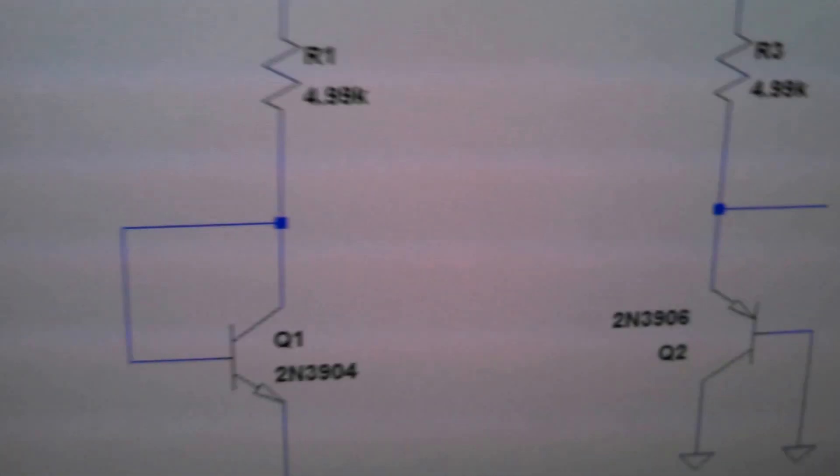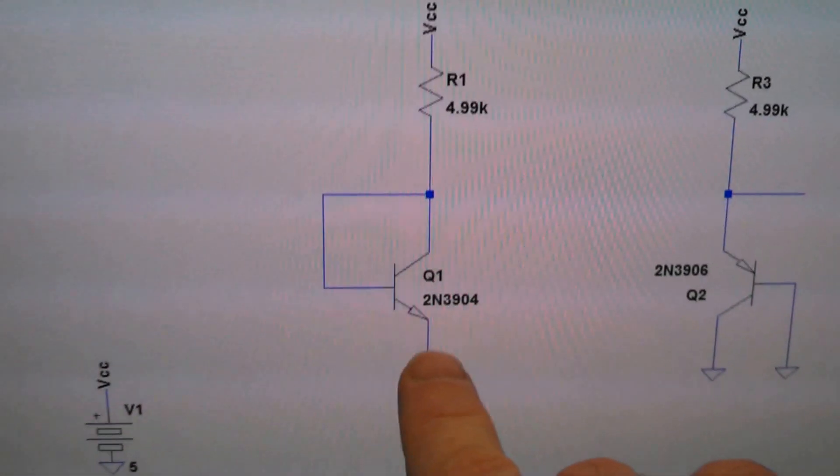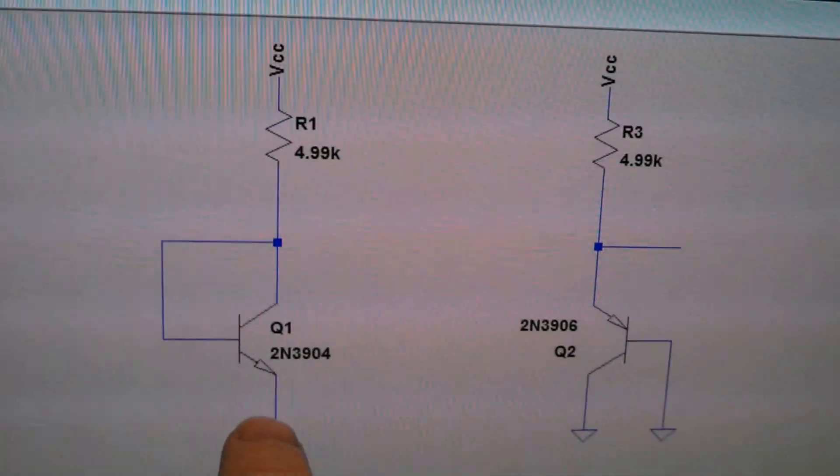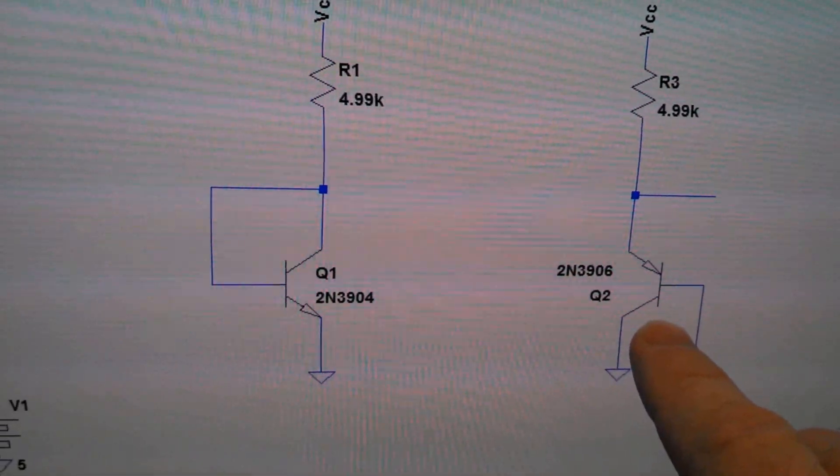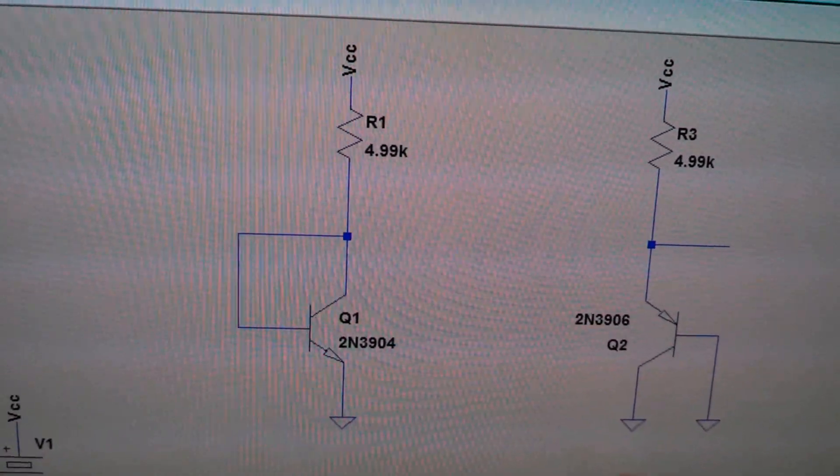And the way you wire the circuit up is if you're using an NPN, you diode connect it. Well, they're both diode connected regardless. And if you're using a PNP, which is what I'm using because I had them laying around the house, you hook it up like this, which is still a diode connection.